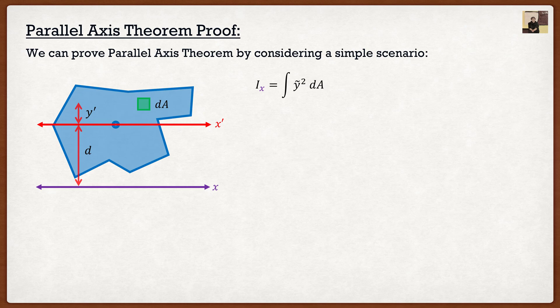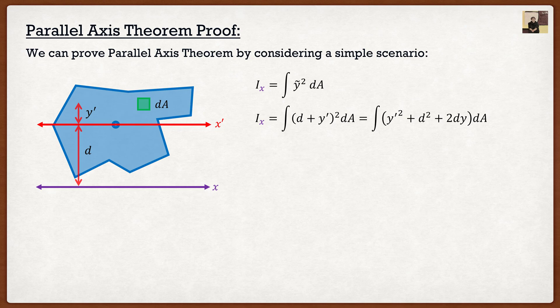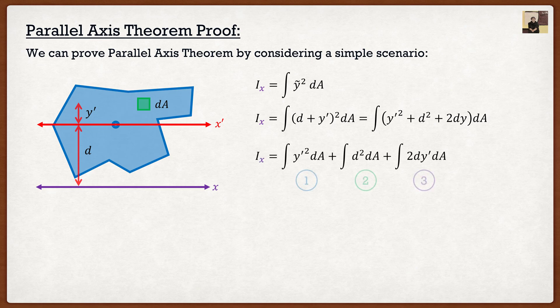So y-tilde is basically the distance from the axis we want — the purple axis — to our element. We can expand this to the integral of (d plus y prime) squared dA. Expanding the squared term gives y prime squared plus d squared plus 2dy prime, and from there we separate it into three integrals, which we'll call 1, 2, and 3. The first integral is the integral of y prime squared dA — the distance from our centroidal axis to the element squared — which is just the moment of inertia about the centroidal axis, i.e., the moment of inertia with respect to x prime, the red axis.